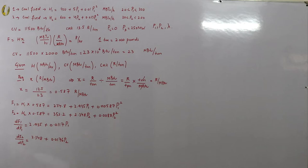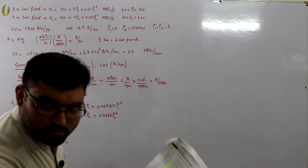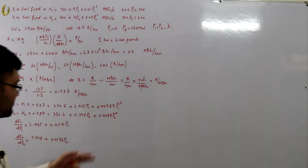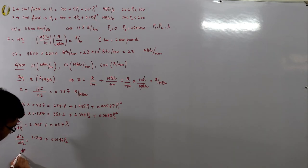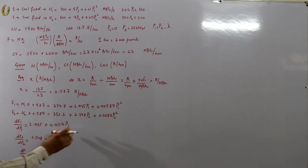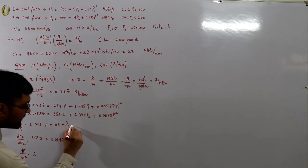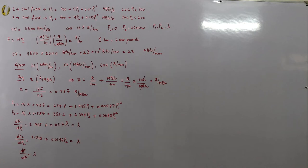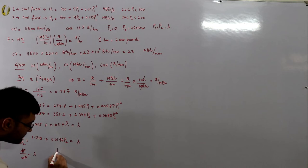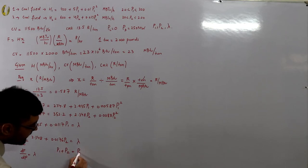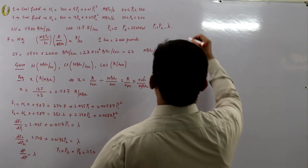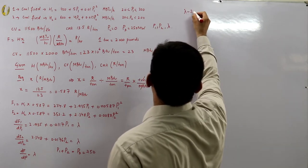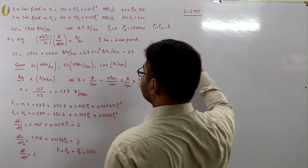We know that dF/dp = lambda. Since there are no losses, we set each incremental cost directly equal to lambda. This is a lossless system, so lambda1 = lambda2 = lambda. From the derivative equations, p1 = (lambda − 2.935) / 0.0117, and p2 = (lambda − 2.348) / 0.0176. Also, p1 + p2 = 250 MW.